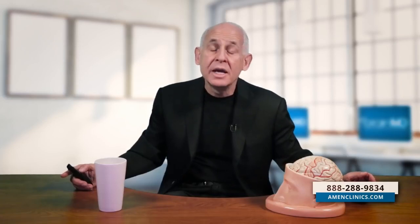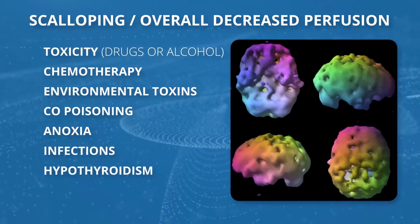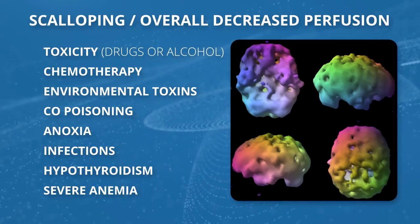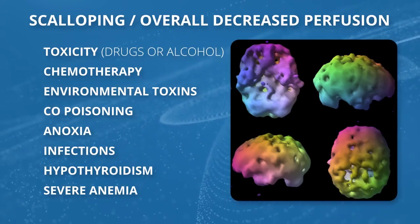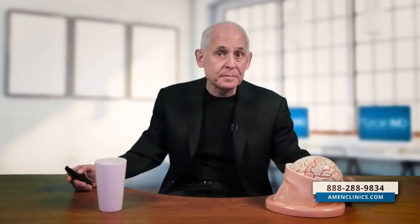For example, if you had a near drowning episode or a heart attack where you stopped breathing for five or ten minutes, it can damage your brain. Infections, hypothyroidism, severe anemia — SPECT is a blood flow study, so anything that lowers red blood cells can in effect damage your brain.